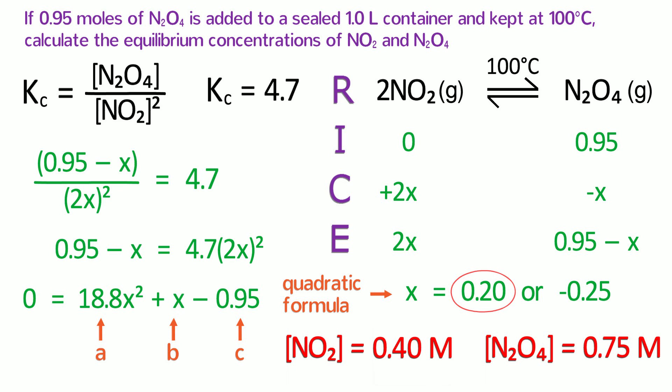That's it. Remember that all reactions move towards equilibrium, which is the point at which the forward and reverse reactions occur at the same rate, and remember to use a RICE table to solve equilibrium problems.